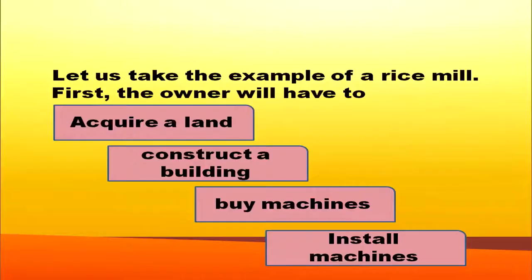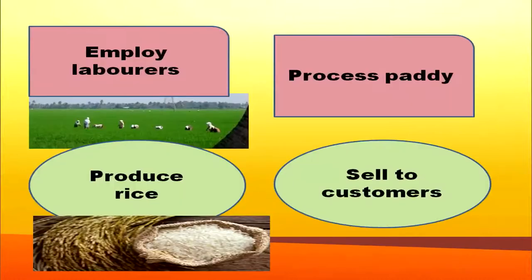Let us take the example of a rice mill. What all things the owner of that rice mill should do? He should acquire land, then construct a building, buy machines and install them. Without laborers, no organization can function, so the owner should employ workers. Processing of paddy should be done to produce rice, and after production, the owner can sell it to consumers.